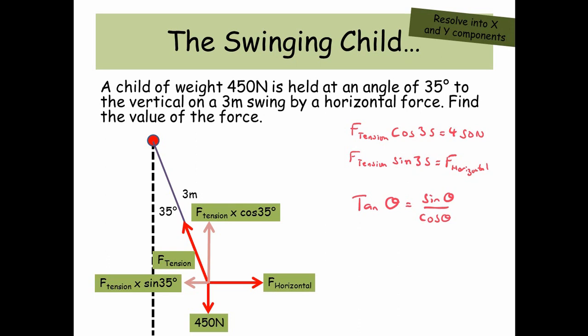Now tan theta is sin theta divided by cos theta. So if we just do our second equation over the first equation, we end up with tan 35 equals the horizontal force over 450. And rearranging this, the horizontal force is 450 times tan 35, which is 350 newtons.